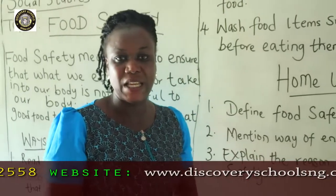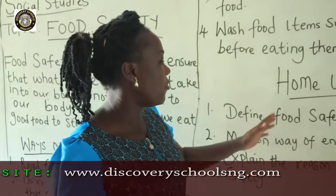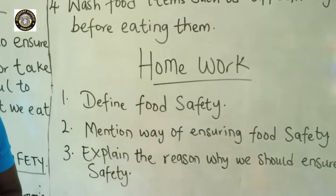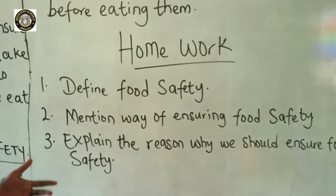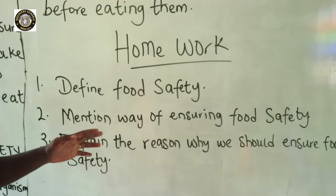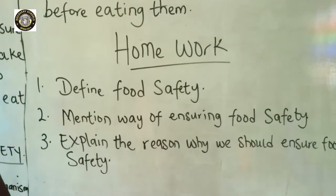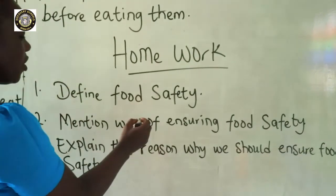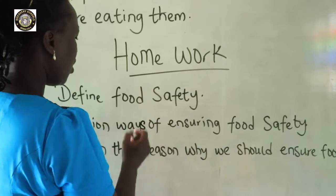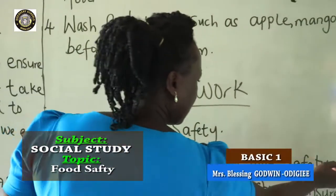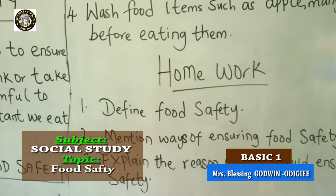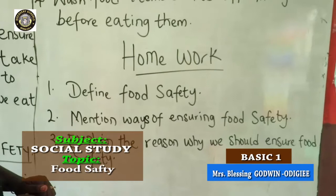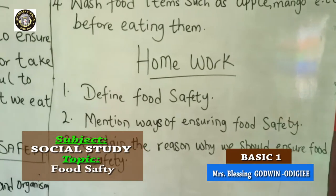Good children, there is some work for you to do. Number one: you are going to define food safety — what is food safety? Two: you have to mention ways of ensuring food safety. And also, you are going to explain the reason why we should ensure food safety.